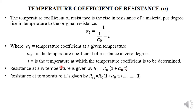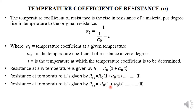The resistance at temperature t1 is given by R_t1, equal to the initial resistance times one plus alpha_zero times t1. Similarly, resistance at temperature t2 is given by R_t2, equal to the initial resistance times one plus alpha at that temperature times t2. All these parameters have been defined.